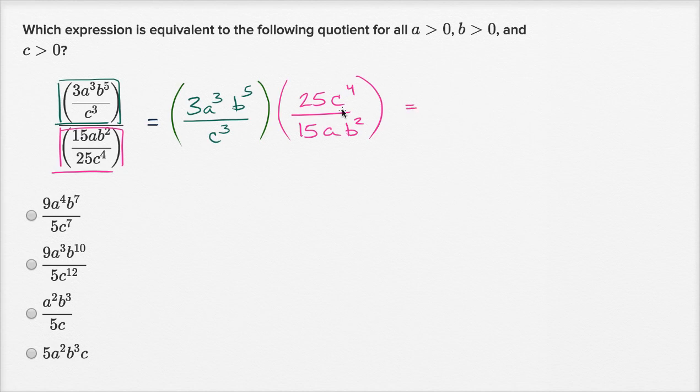And so what's this going to be? Well, in the numerator you're going to have three times 25 is 75, and then a to the third, b to the fifth, c to the fourth. And then in the denominator, you're going to have 15, times a, times b squared, times c to the third power.